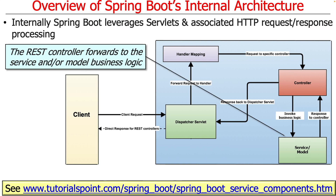Usually what the controller does is invoke a corresponding implementation method on something called a service — and that's exactly what you'll be doing in assignment 1A. You don't have to have a service, but it makes life much easier because once you decouple the controller from the service, the service is all just good old Java, whereas the controller is a mishmash of HTTP and Java. You want to get out of that world as fast as possible into the Java world, where the business logic goes. The service will do the processing and work with a model — for assignment 1A, that's just an in-memory data structure like a list or a map.